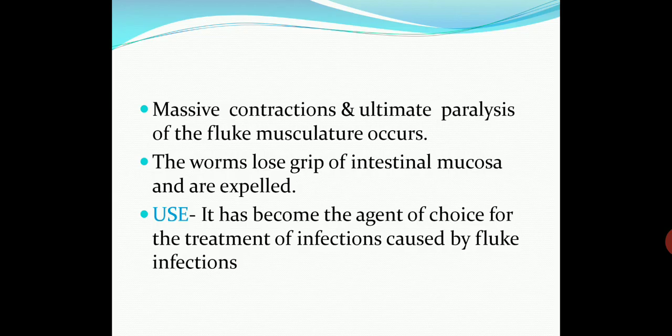This is all about anthelmintics. What we have seen during today's lecture: the classification according to chemical structure or chemical moiety, as well as according to type of infection, with certain examples of specific worms, their mechanisms of action, contraindications, and adverse effects of albendazole, mebendazole, and praziquantel. Thank you.